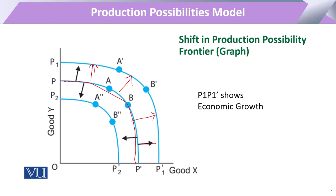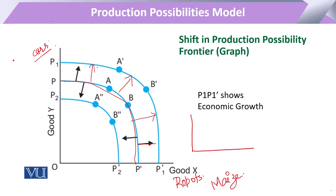We will explain this using an isoquant. Good X and Good Y are produced — if we say Good X represents robots and Good Y represents cars produced in industry. And if we use agriculture, then in the resources there is maize and feed as examples of those resources.